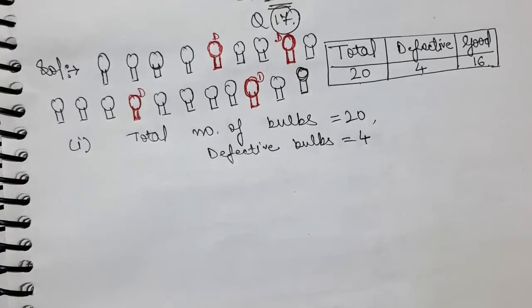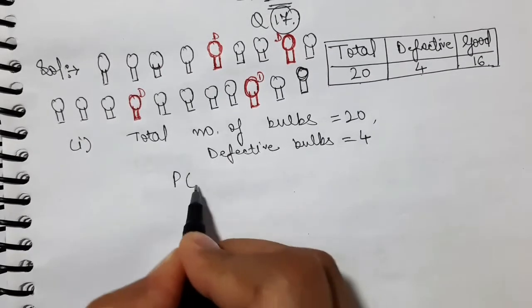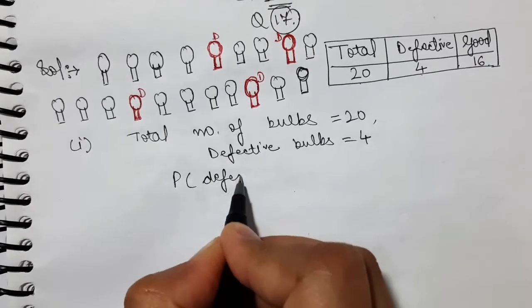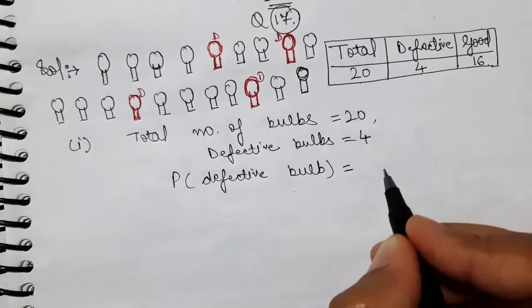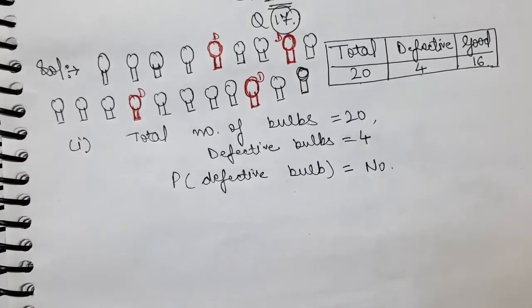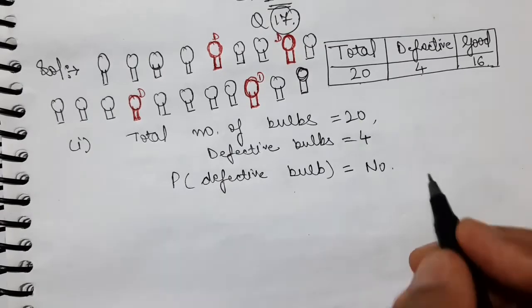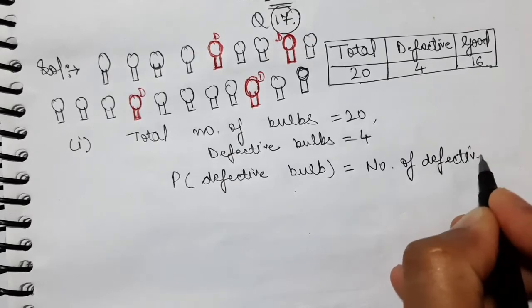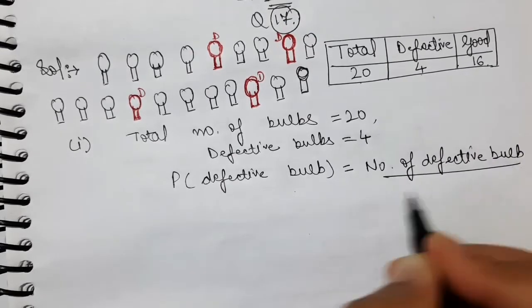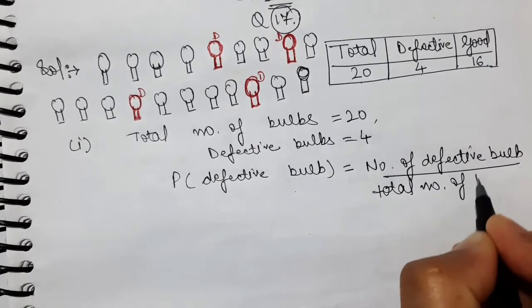So, we have to find one bulb randomly. What is the probability of this bulb? Very simple. Number of favorable outcomes divided by total number of outcomes. What is the favorable outcome? Defective bulbs. So, number of defective bulbs divided by total number of bulbs.